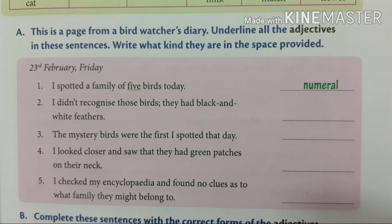Look at the fourth sentence: 'I looked closer and saw that they had green patches on their neck.' Which is the adjective? 'Green' is the descriptive adjective. And there is also a possessive adjective. Look at the next sentence: 'I checked my encyclopedia and I found no clues as to what family they might belong to.' Here, 'my' is the possessive adjective.